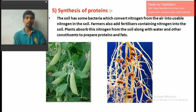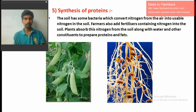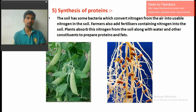Plants absorb nitrogen from the soil along with water and other constituents to prepare proteins and fats. In the actual environment, nitrogen is not directly usable for plants — it is present in the air. In fact, 78% of the total air is nitrogen.